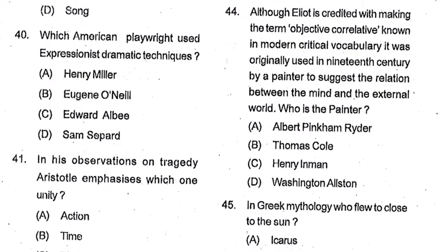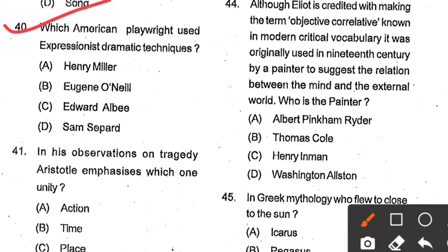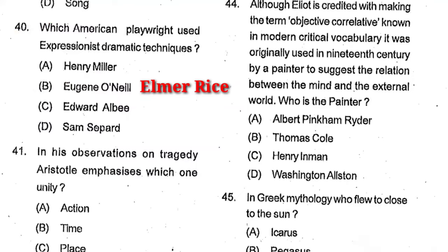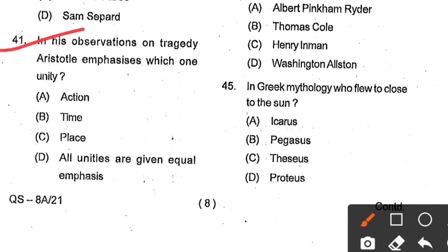Question number 40: Which American playwright used expressionist dramatic techniques? Options: Henry Miller, Eugene O'Neill, Edward Albee, Sam Shepard. Option B, Eugene O'Neill, is the correct answer. Two writers famous for expressionist dramatic techniques are Eugene O'Neill and Elmer Rice. Question number 41: In his observations on tragedy, Aristotle emphasizes which one unity? Options: action, time, place, or all unities equally. Option A, action (or plot), is the correct answer.